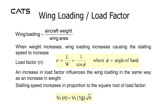Wing loading and load factor. Wing loading equals aircraft weight divided by wing area. When weight increases, wing loading increases, causing the stalling speed to increase. Load factor N equals lift divided by weight, or 1 over cosine of the bank angle. An increase in load factor influences wing load in the same way as an increase in weight. Stalling speed increases in proportion to the square root of load factor: VS new = VS(1G) × √N.